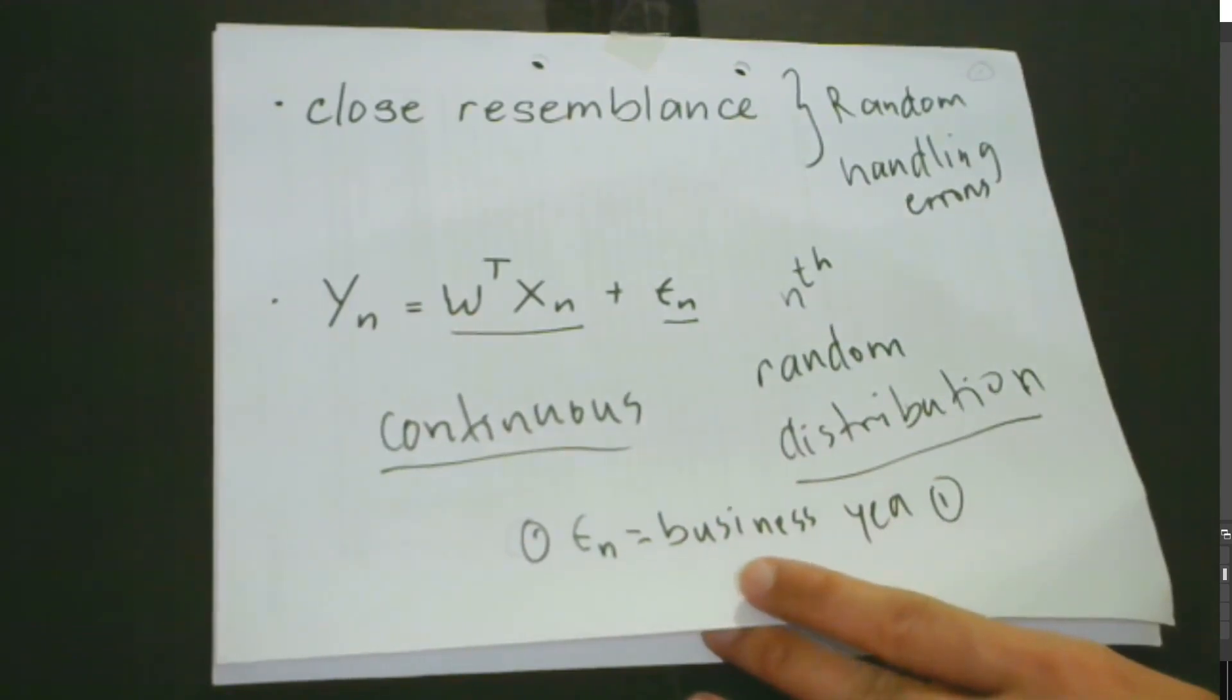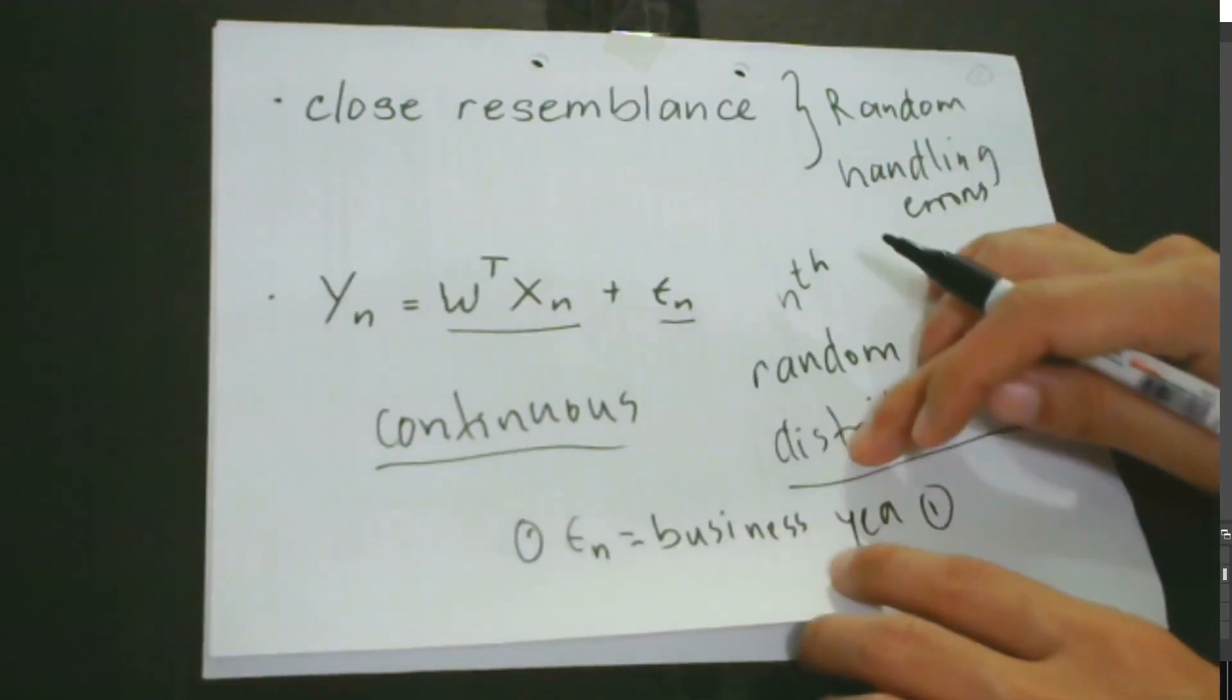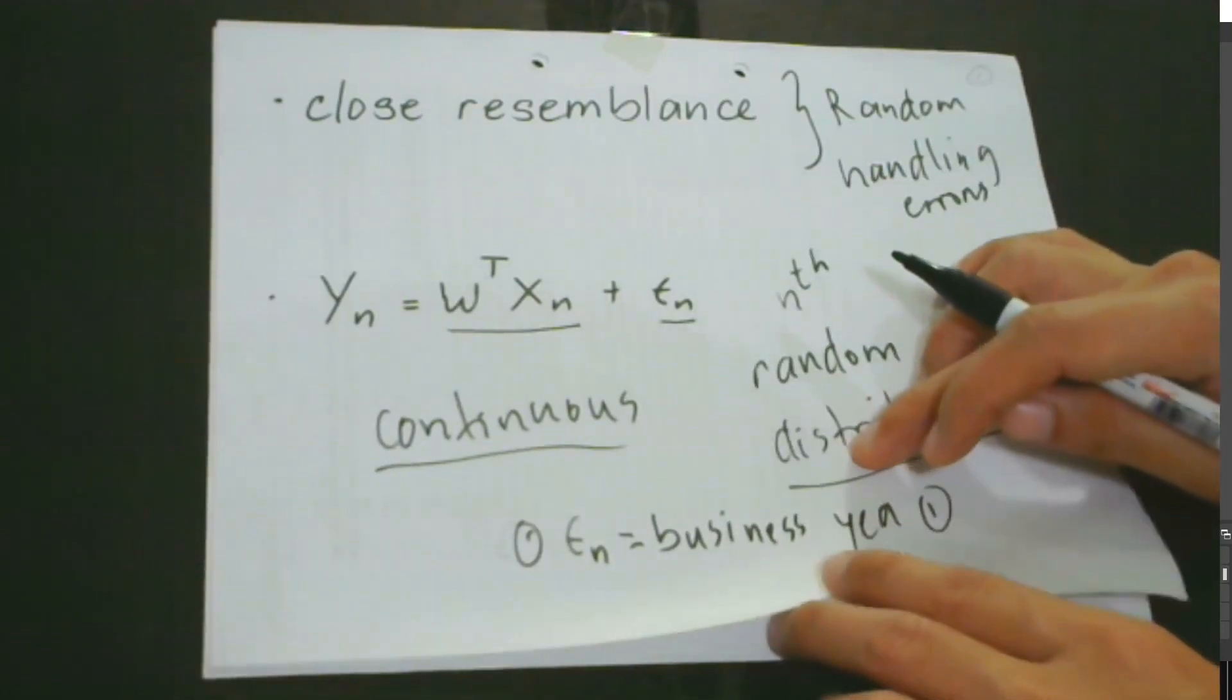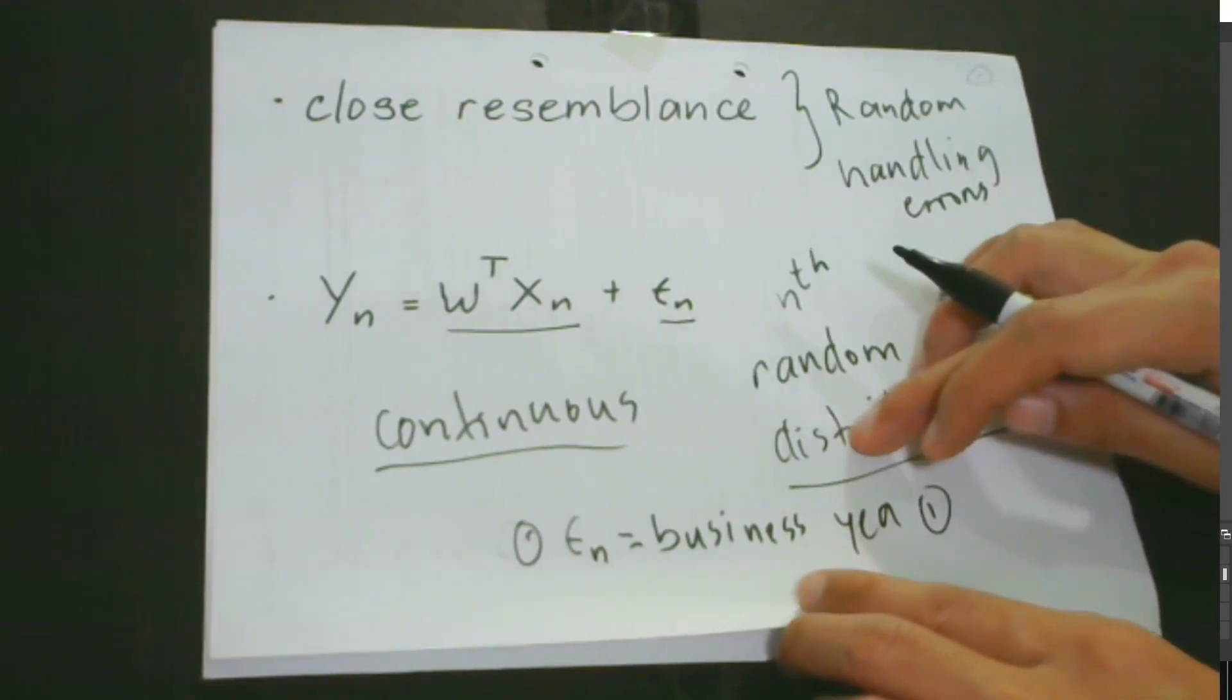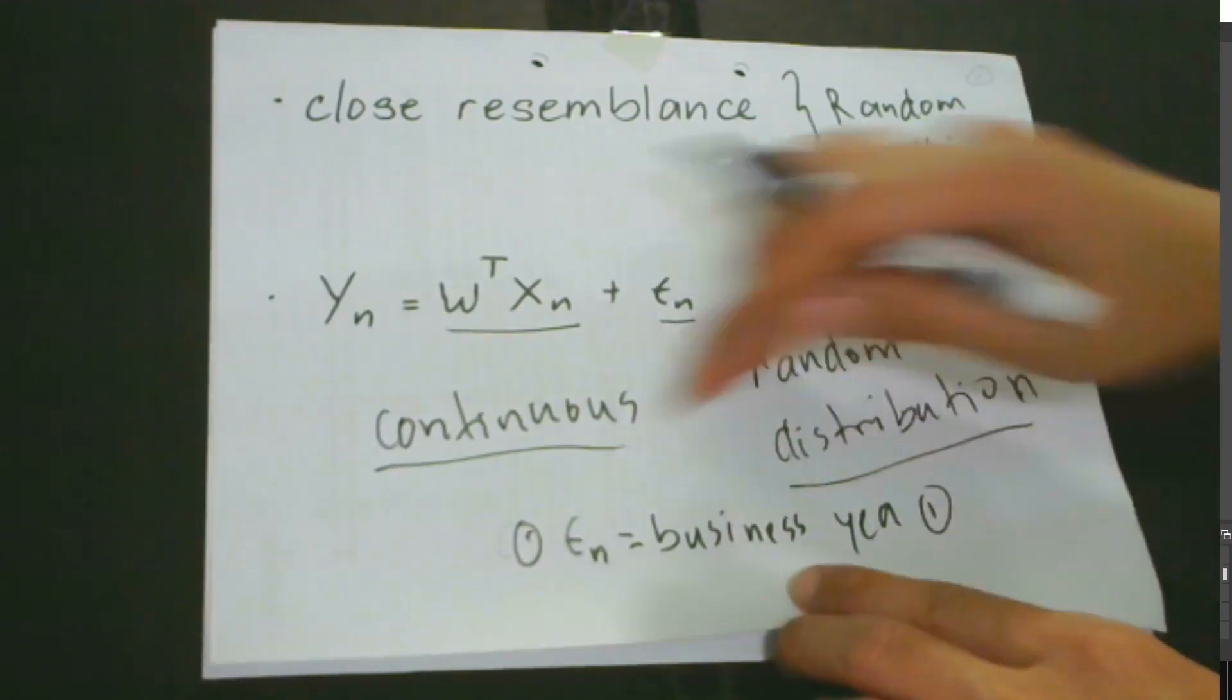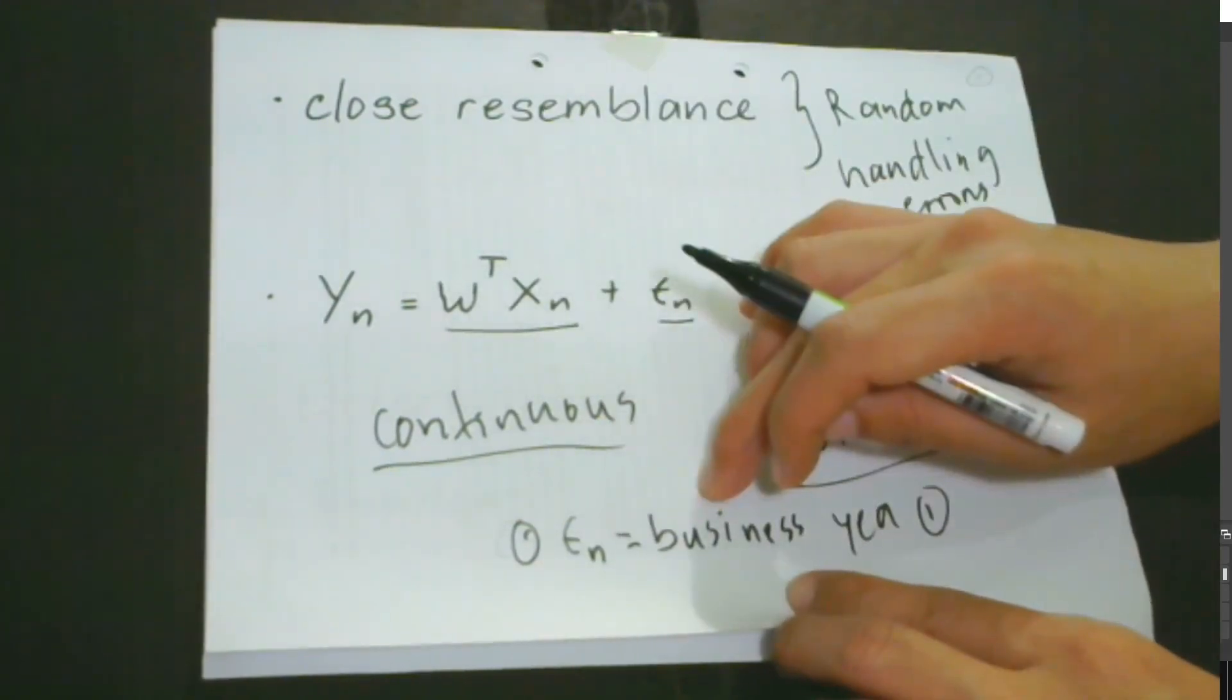The fact is that in each year, there would always be different forms of data, there would be different values of data. So that's why our errors, our random variables would not be the same.